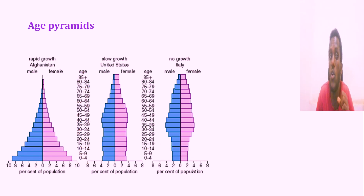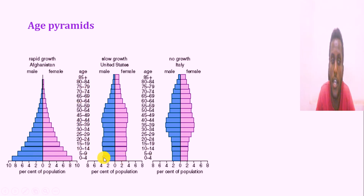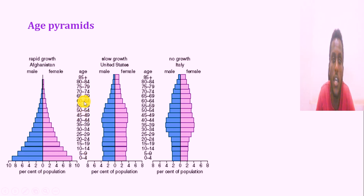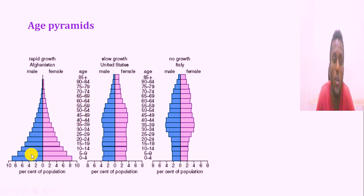One type of age pyramid represents a small percentage of the older population, but more than one percent of the overall population structure.